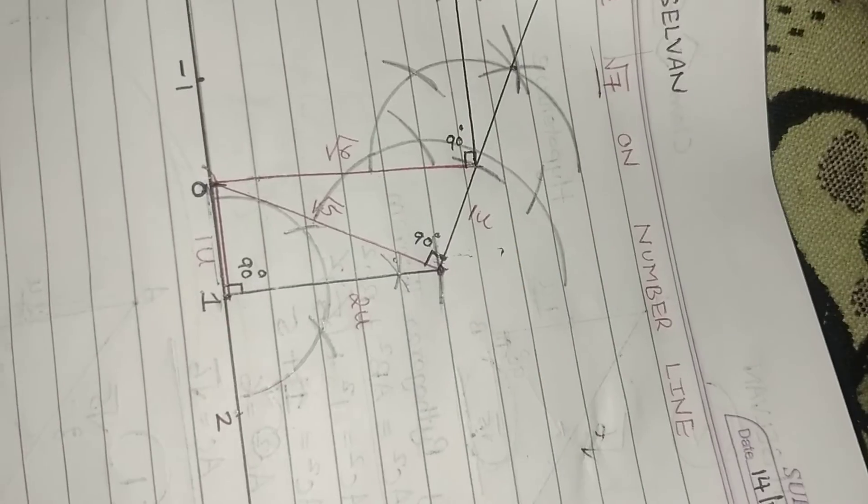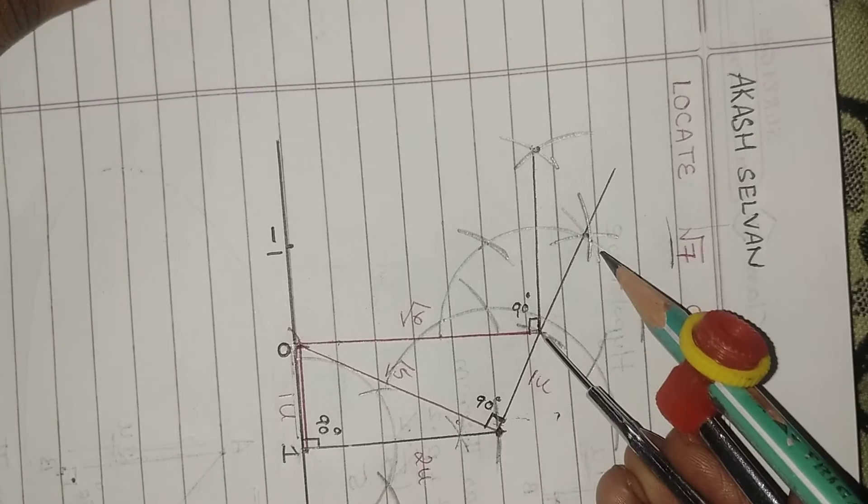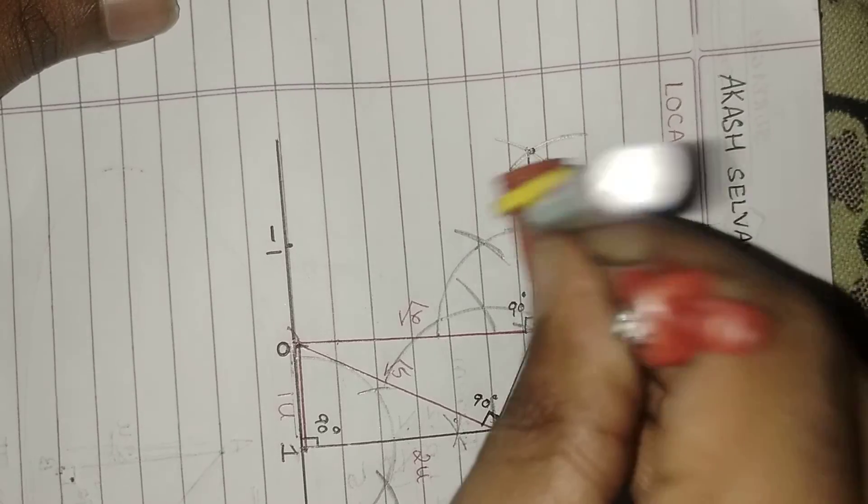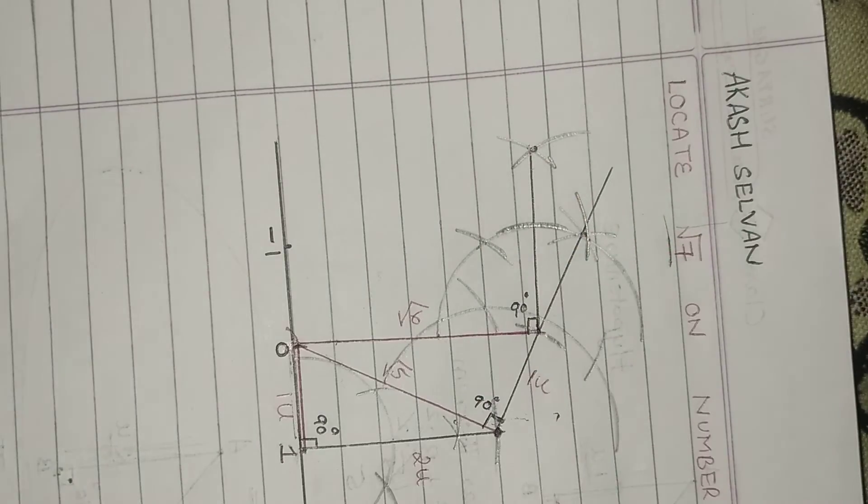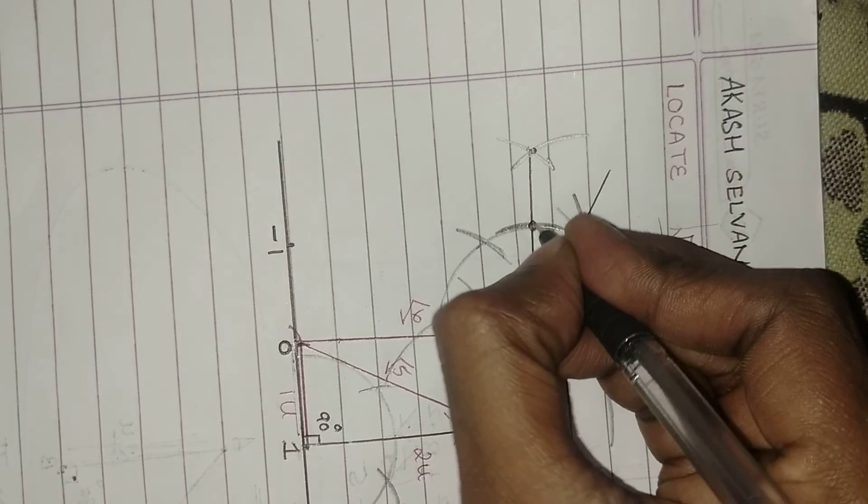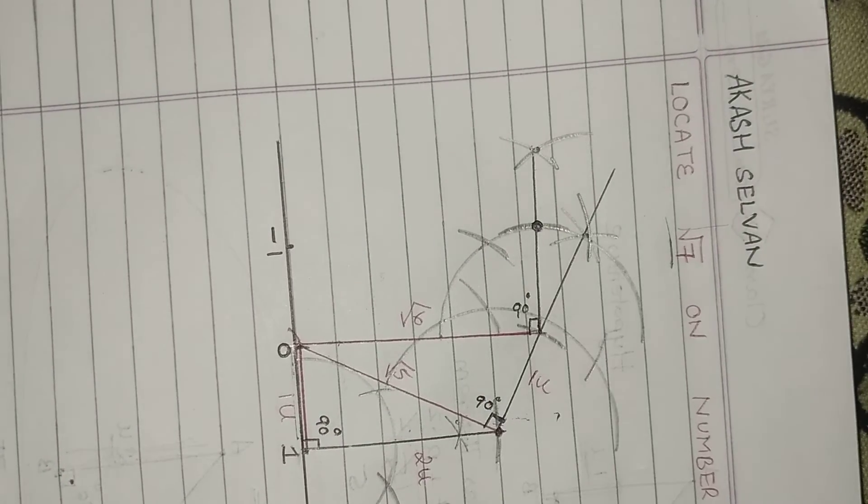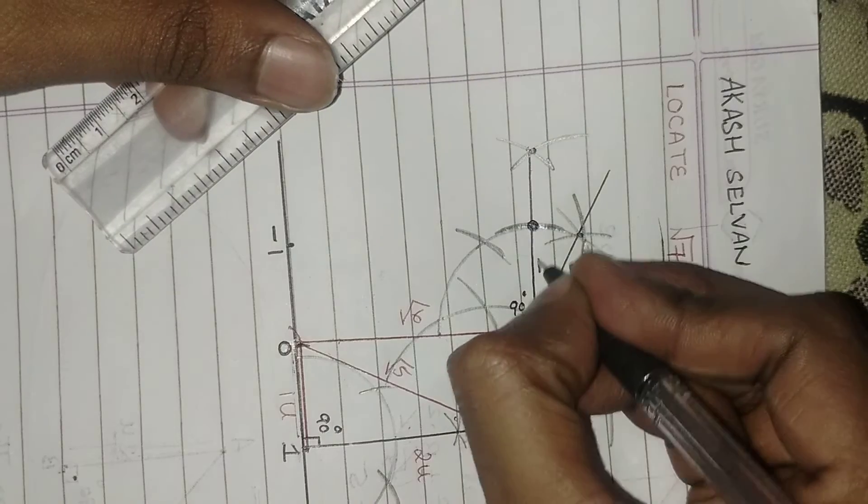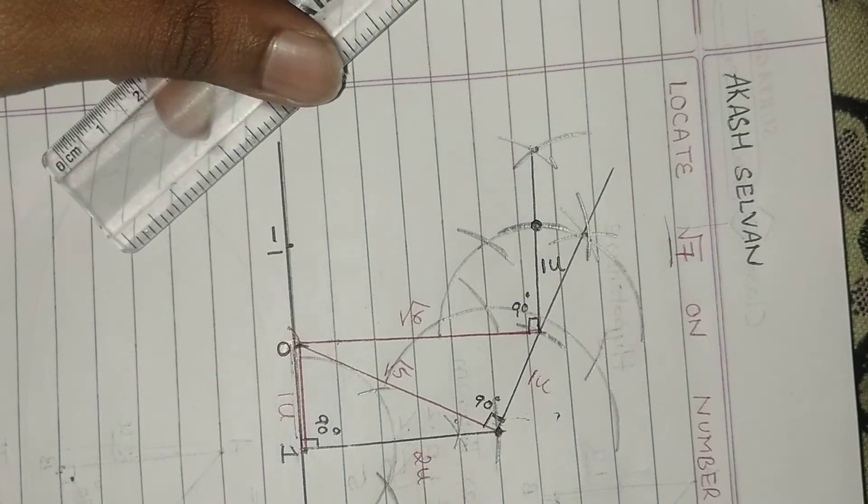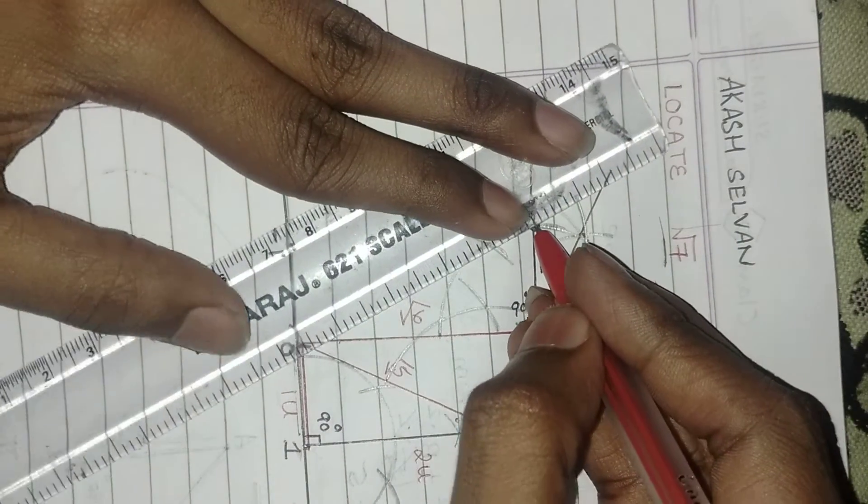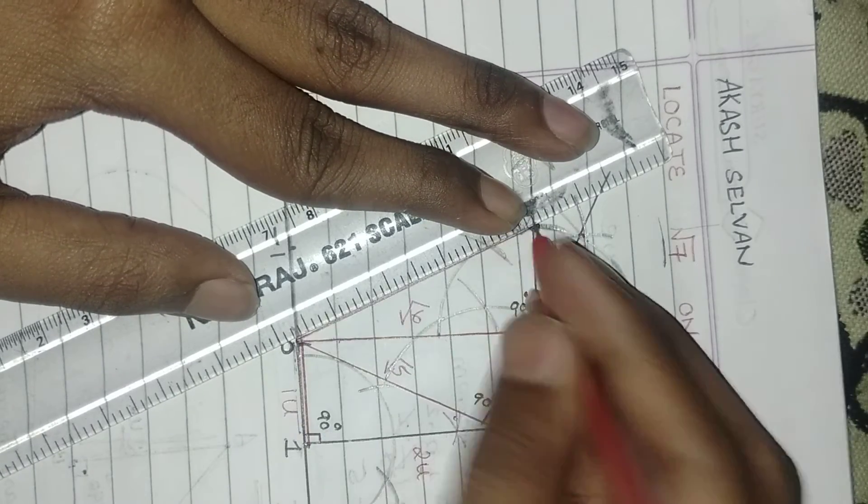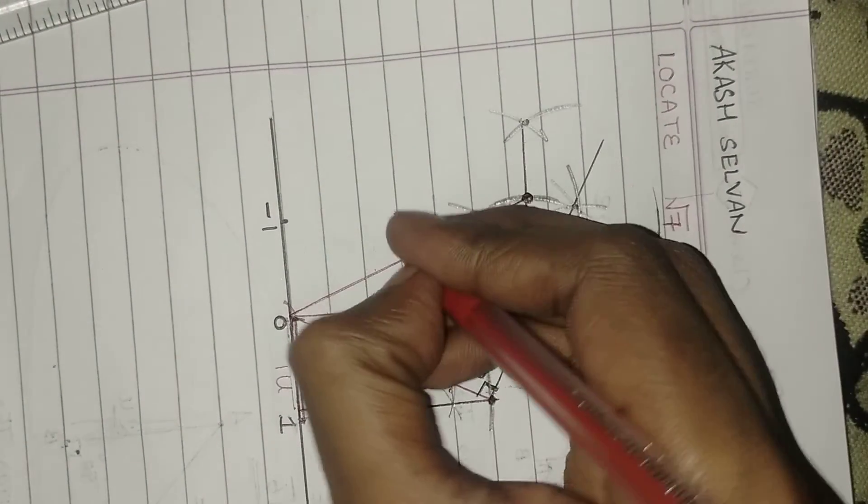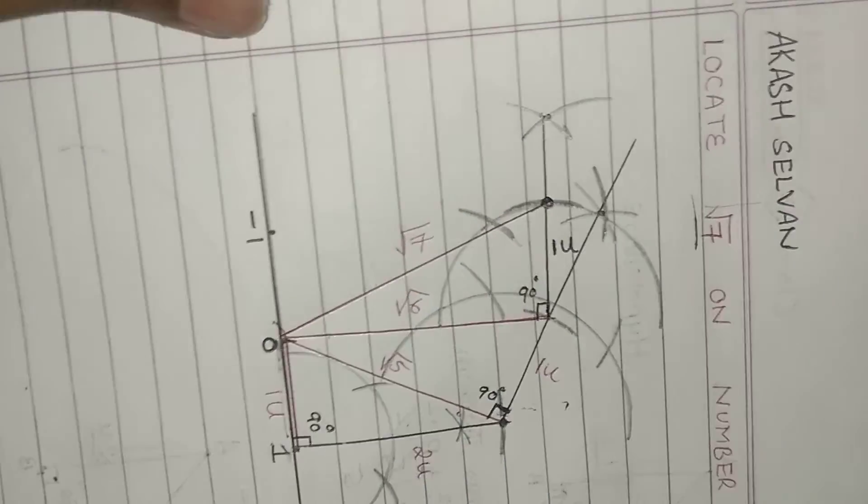From this 90 degree angle, cut 1 unit like this. Yes, the semicircle that I took was also 1 unit I guess, that's why both the arcs are overlapping. So this is my 1 unit. From 1 unit, you just draw a line to 0. At last, we got root 7 now after 3 steps.